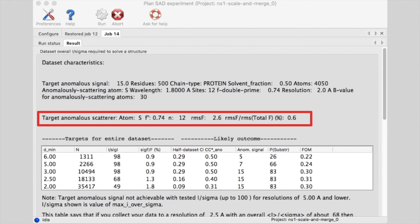Now we find it takes an I over sigma of 98 to get a half-dataset CC of 0.29 and an anomalous signal of 15.